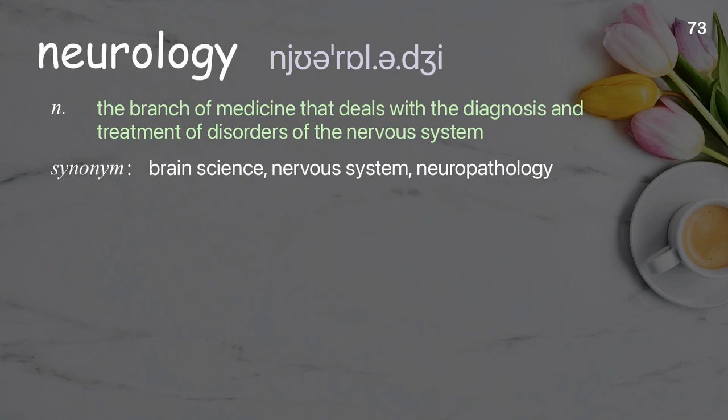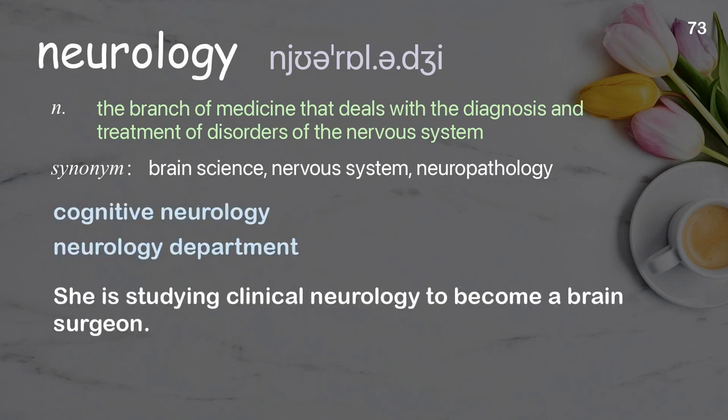Neurology. The branch of medicine that deals with the diagnosis and treatment of disorders of the nervous system. Examples: cognitive neurology, neurology department. She is studying clinical neurology to become a brain surgeon.